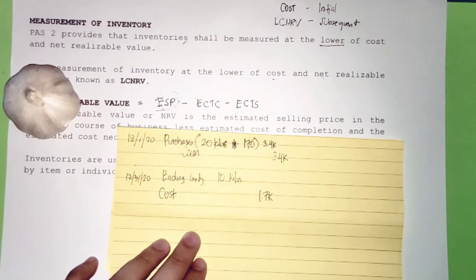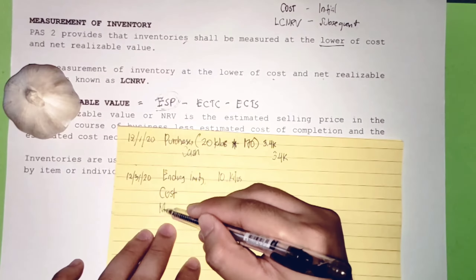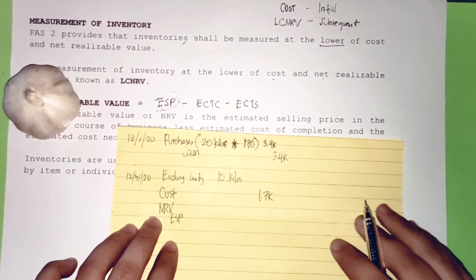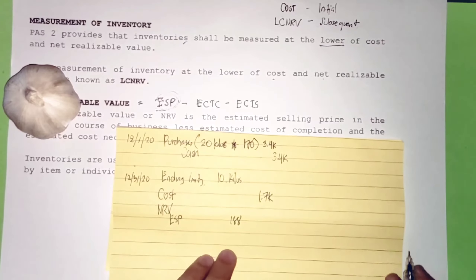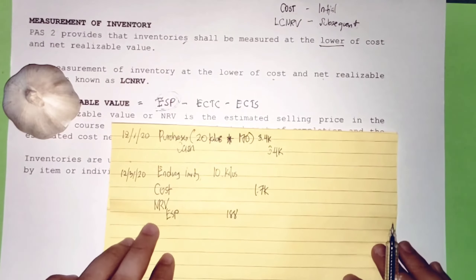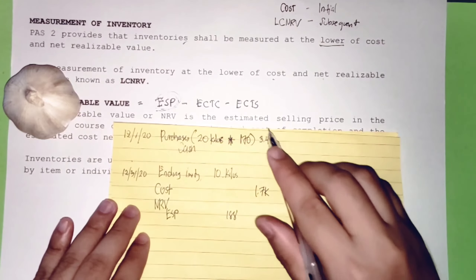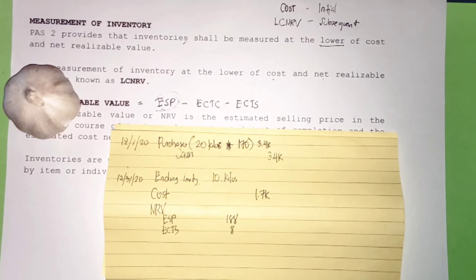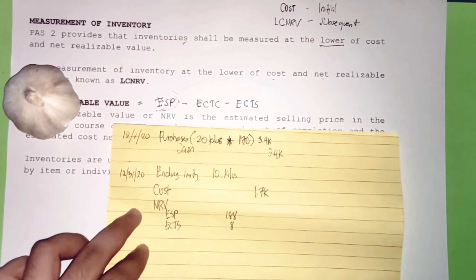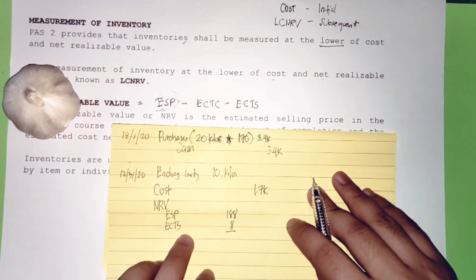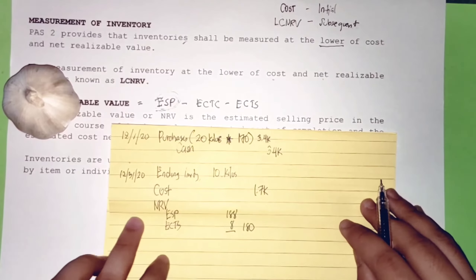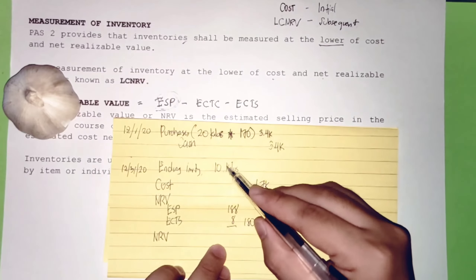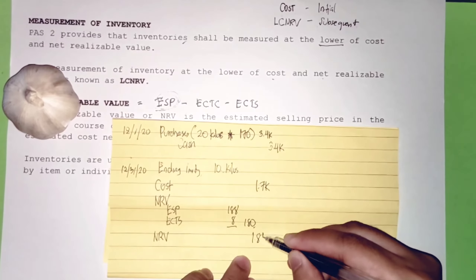Applying lower of cost and net realizable value: the estimated selling price of garlic per kilo is ₱188. Estimated cost to complete is zero. Estimated cost to sell is ₱8 per kilo. Therefore, NRV per kilo = ₱188 − ₱8 = ₱180. NRV for 10 kilos = 10 × ₱180 = ₱1,800.